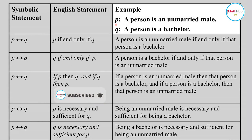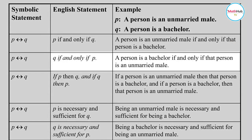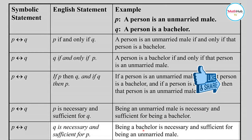Suppose p is 'a person is an unmarried male' and q is 'a person is a bachelor.' In 'p if and only if q' form: 'a person is an unmarried male if and only if that person is a bachelor,' or equivalently, 'a person is a bachelor if and only if that person is an unmarried male.' Being an unmarried male is necessary and sufficient for being a bachelor — that is a biconditional statement.